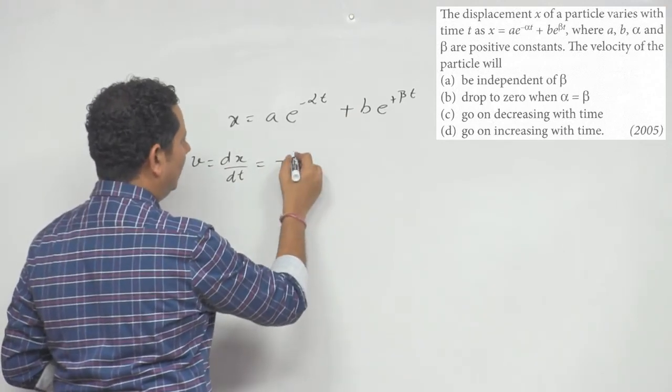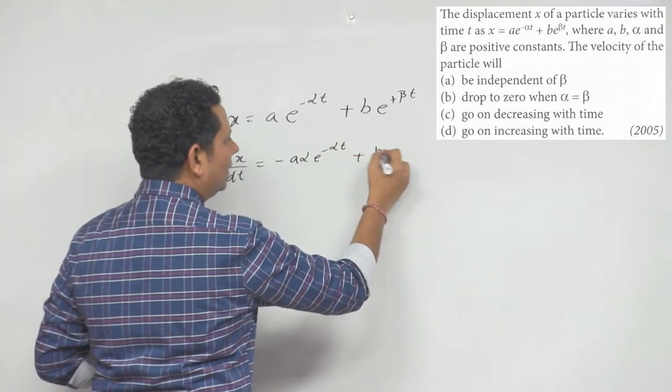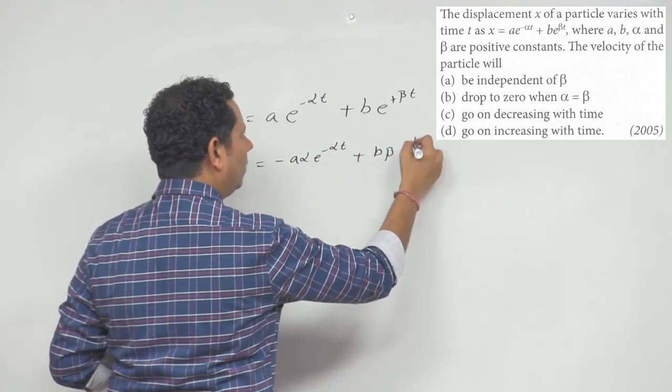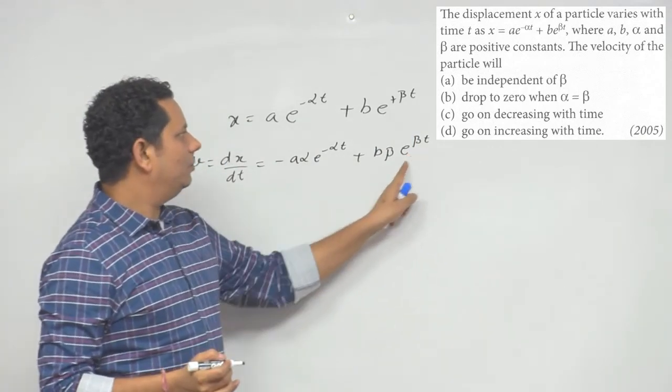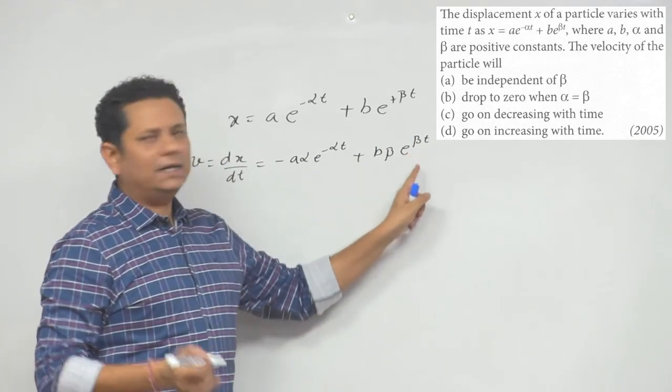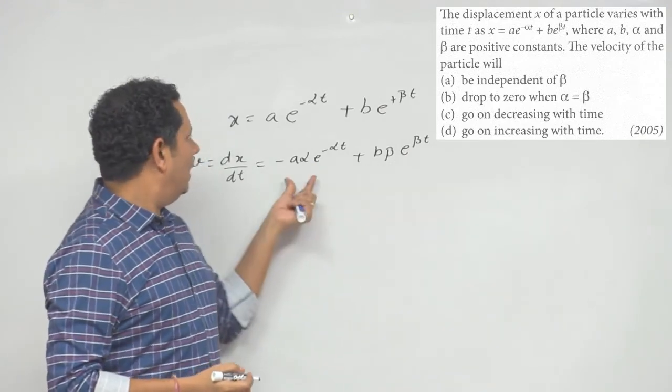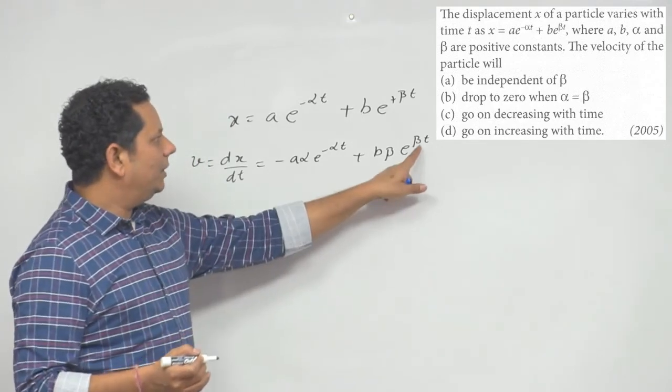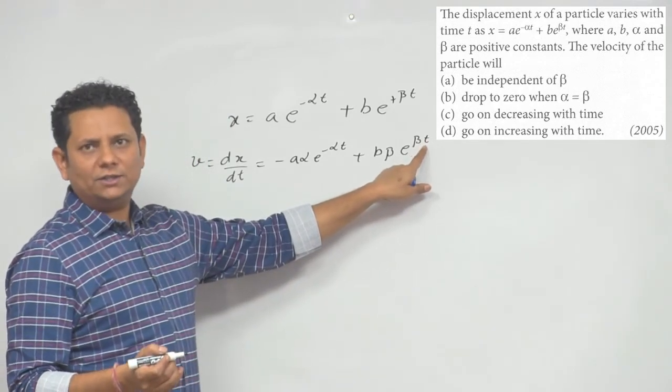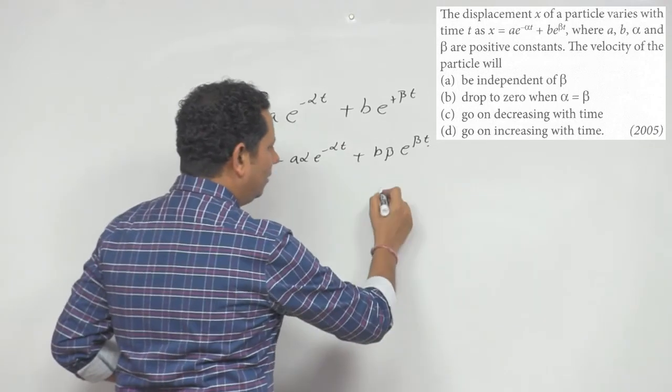When we differentiate, this will become minus a alpha e to the power minus alpha t plus b beta e to the power beta t. यह आपकी velocity। यह आपका exponentially it will keep on rising.